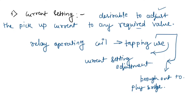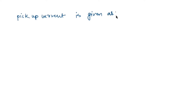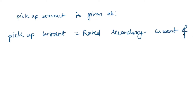Altering the number of turns changes the torque on the disc relay coil. This torque change in turn changes the time of operation of the relay. The pickup current value is given as a formula involving the rated secondary current of the CT.